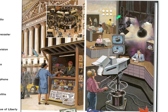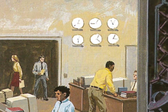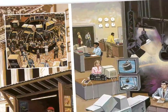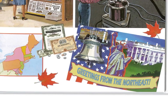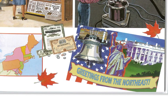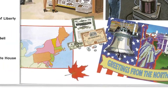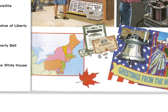Radio, telephone — notice the clocks that give the time for different places in the world. Greetings from the northeast: we're famous for the White House, the Statue of Liberty, the Liberty Bell, and the stock market — making money. Here are the states included in the northeast. You'll also notice the maple leaf, which is also Canada's symbol, where we get maple syrup. That is the northeast.